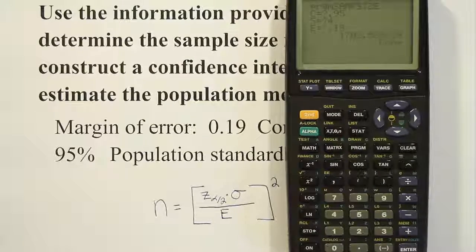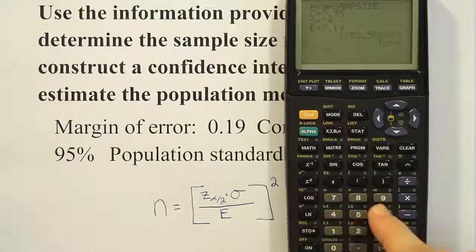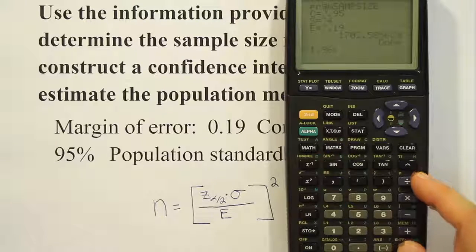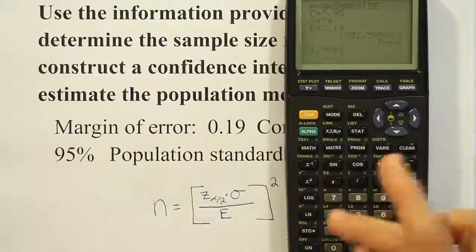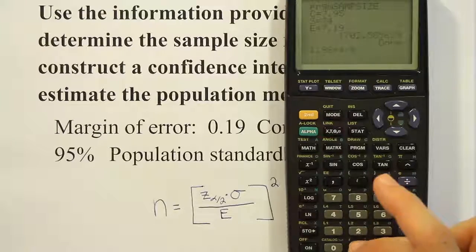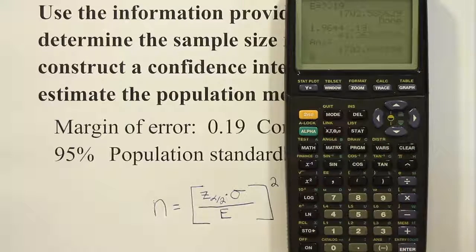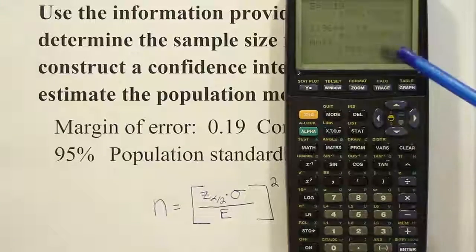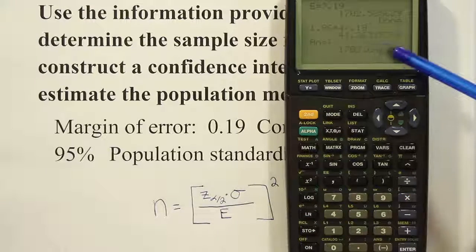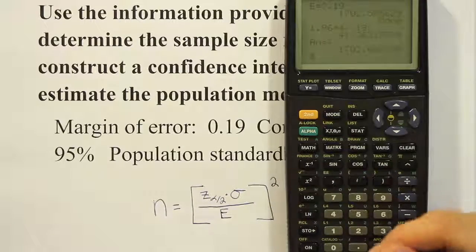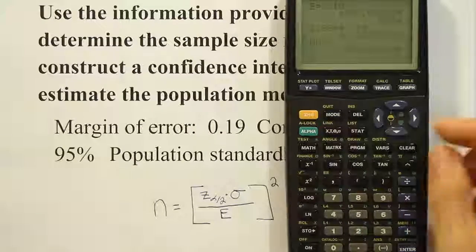To verify: z_α/2 for a 95% confidence interval is approximately 1.96. Multiply by 4, divide by 0.19, then square — that gives about 1702. Our program shows 1702.64 because it uses the more precise z_α/2 value rather than the rounded 1.96. Either way, both round up to 1703, confirming our program works correctly.